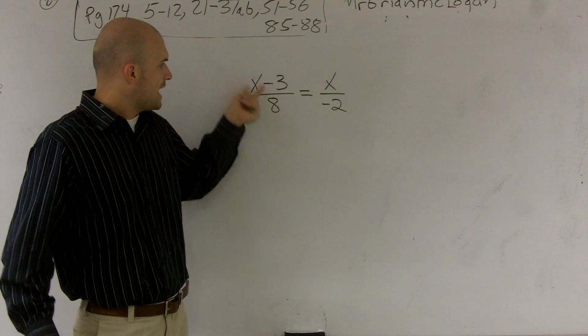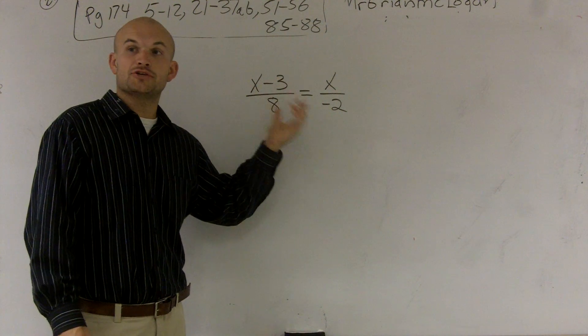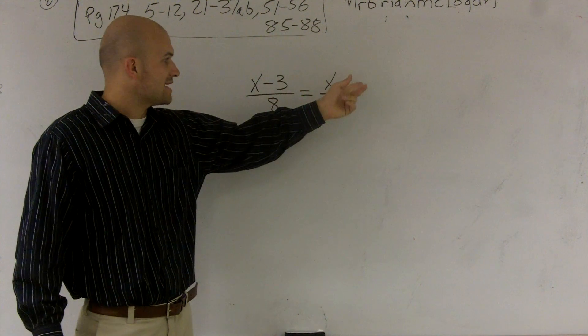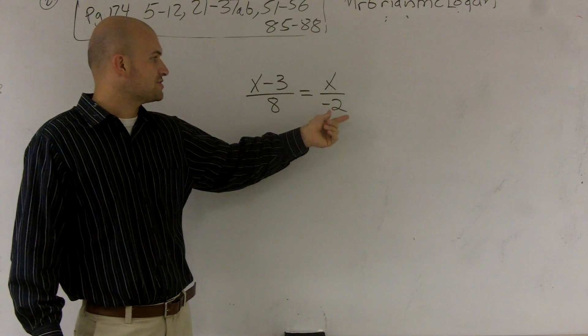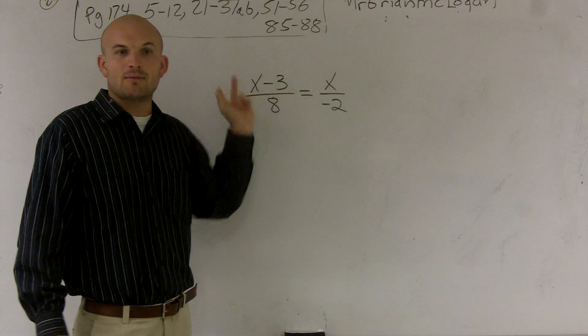One thing is I see that I'm dividing by 8. So I could undo division by multiplying an 8 on both sides. And I could undo division of a negative 2 by multiplying a negative 2 on both sides.